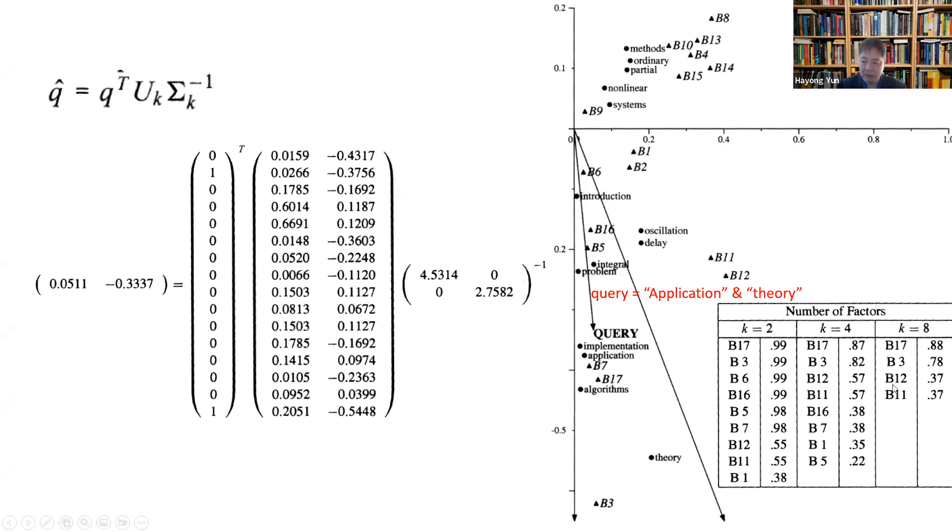It will find the books that are closest. You can see which books are closest with k=2. These are further away, so it finds which books align with the query vector the closest.